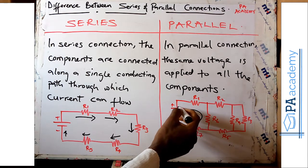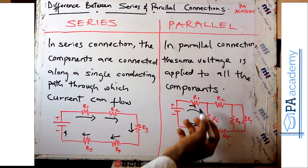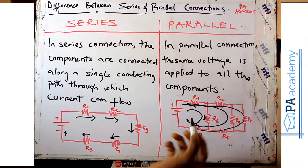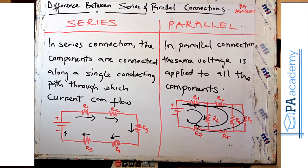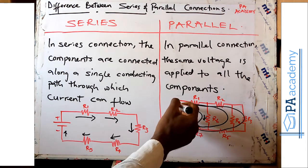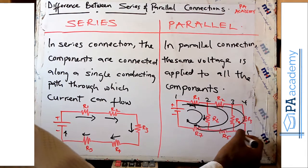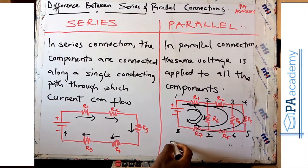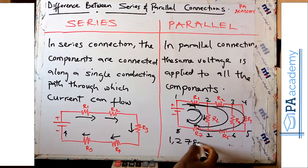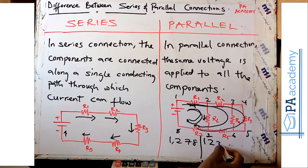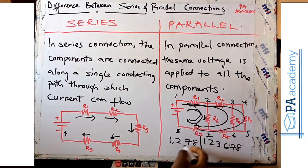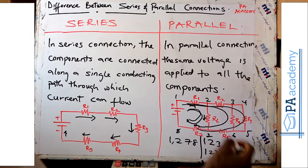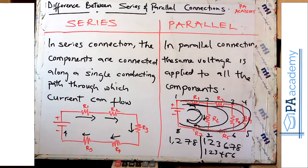From the source, you can see current can move through one path, and also through another path from the source straight to a different part — that's what makes it a parallel connection. Numbering the nodes one through eight, we have one path passing through nodes 1, 2, 7, 8; another passing through 1, 2, 3, 6, 7, 8; and another passing through the entire circuit. That is the difference between series and parallel in terms of definition and diagram.